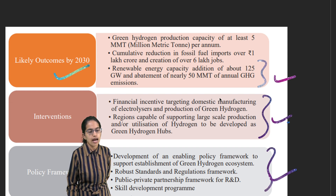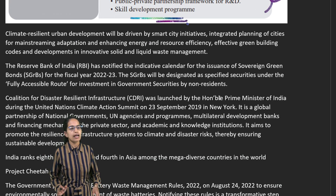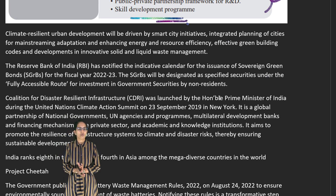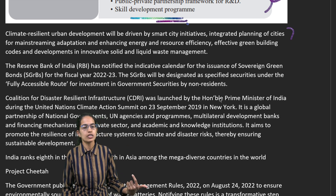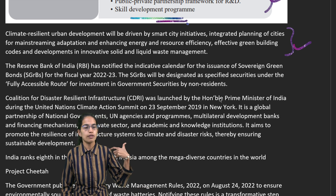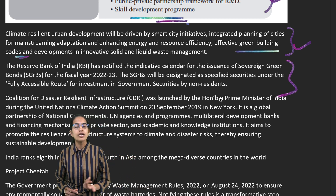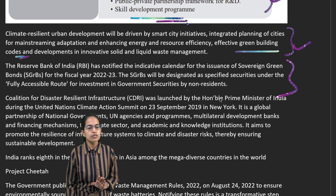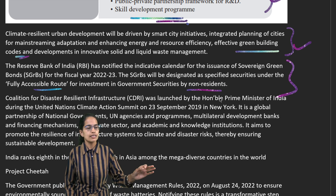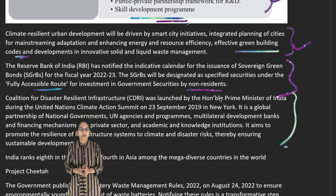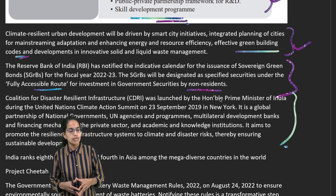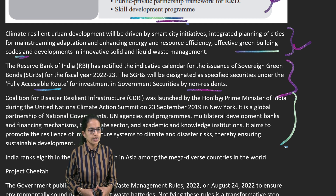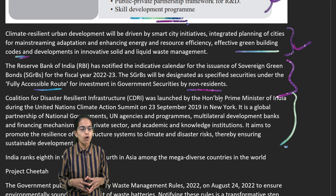India has introduced climate-resilient infrastructure projects focusing on resource efficiency, better infrastructure, and energy-efficient building codes. Sovereign green bonds have been released — similar to sovereign gold bonds — allowing individual investments and non-resident investments through a fully accessible route, with funds directed toward green energy development. The Coalition for Disaster Resilient Infrastructure was launched by the Prime Minister at the Climate Summit in New York in 2019, partnering national governments, UN agencies, and stakeholder organizations.